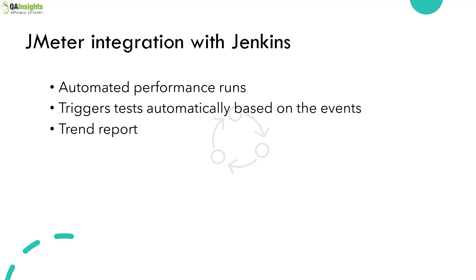For example, once the code is pushed to a GitHub repository, you will be able to trigger your tests automatically and send notifications to all your stakeholders. You'll also be able to create a trend report so that you can compare your previous run and previous release executions with the current status. There are a lot of features available by integrating JMeter with Jenkins — what I've listed is just a small drop.